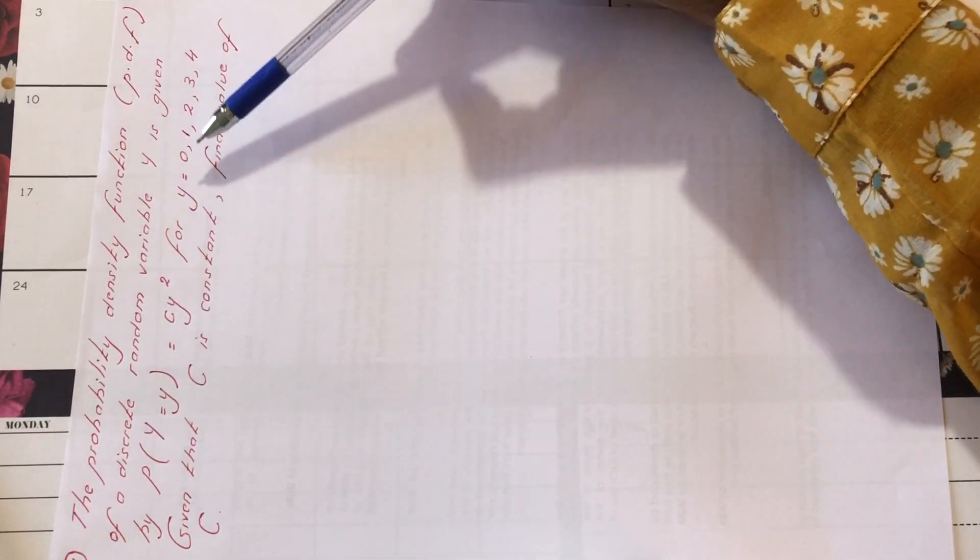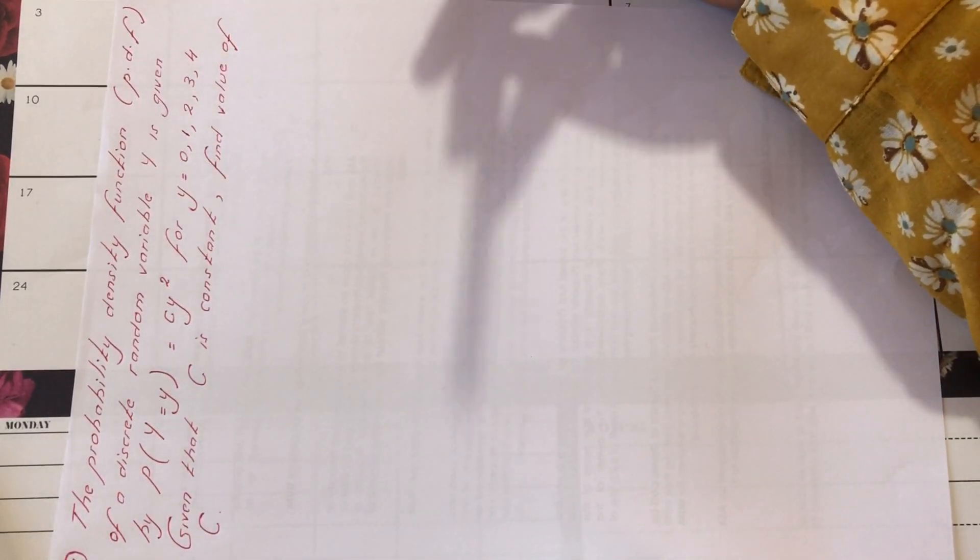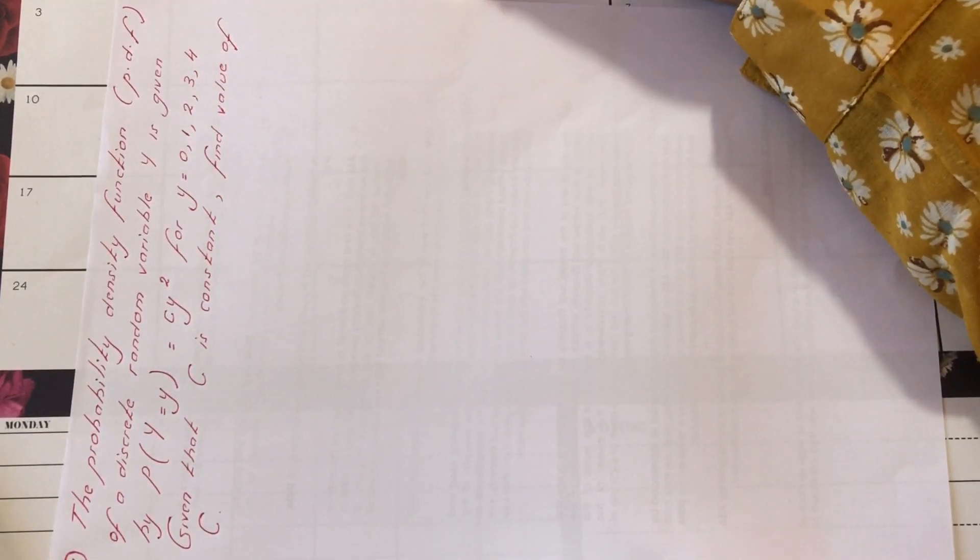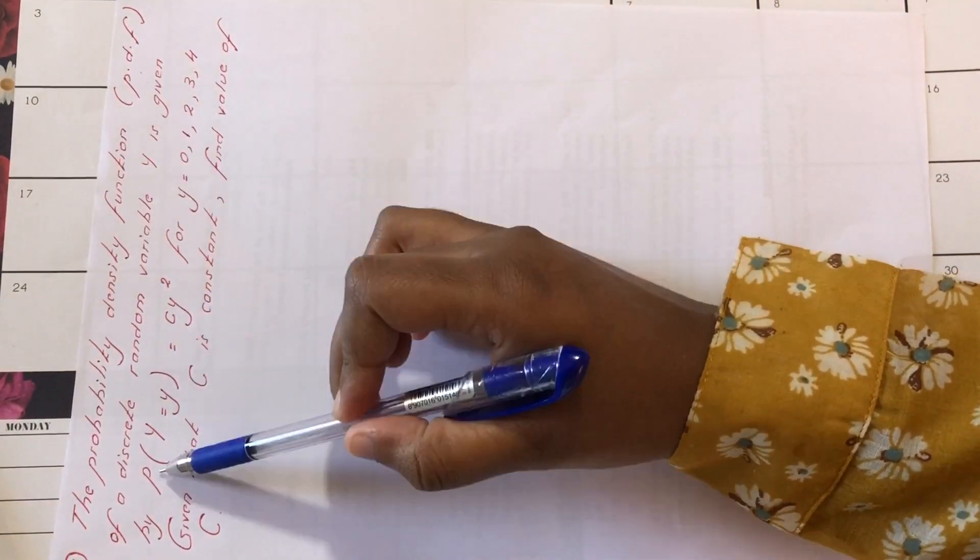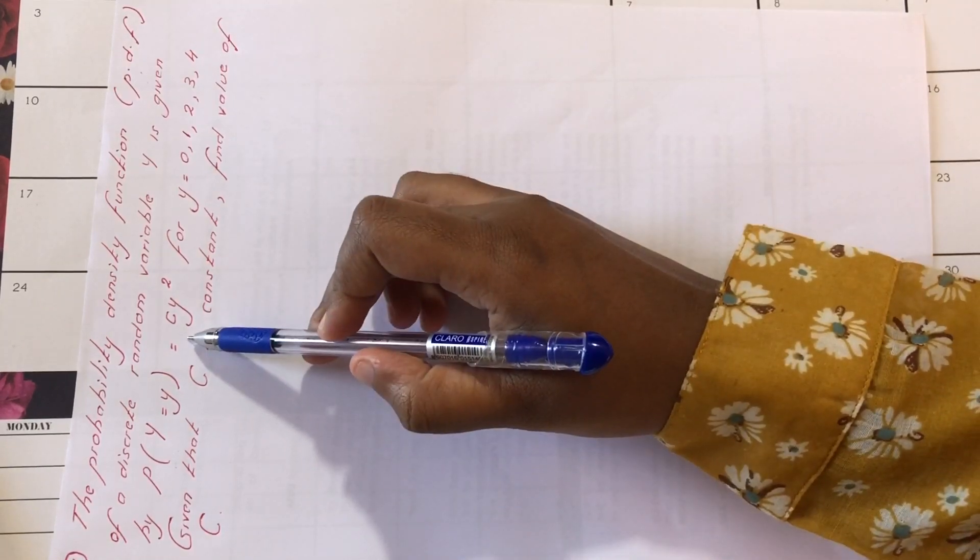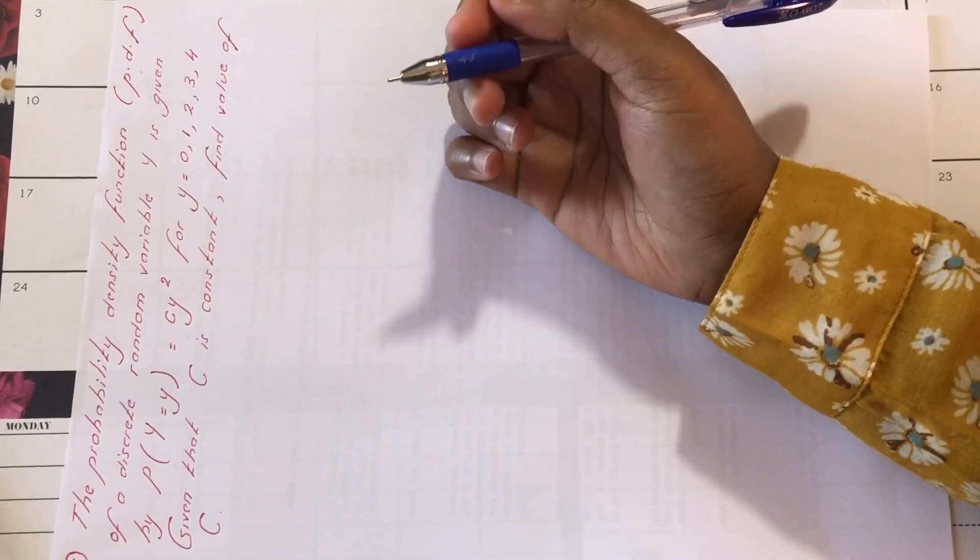For y is valid for values 0, 1, 2, 3 and 4. Given that c is a constant, find the value of c. The pdf of x, the pdf of x, it is a function of x, in this case y, assigning the probability for each value of y.